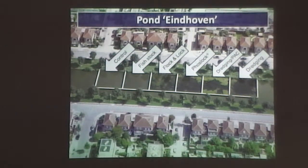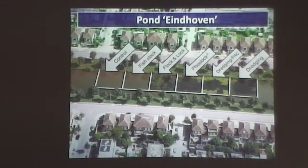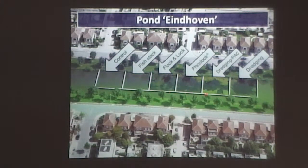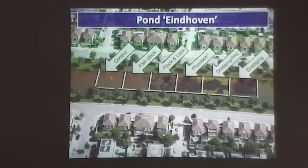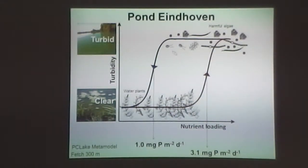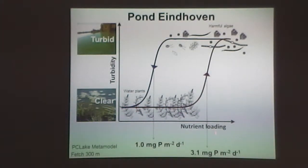So it's already an example that your system tells you what you need to do to get to your desired outcome. You can see already, over time, the ones that received some additional sediment treatment — their plants spread out and actually filled up the entire water, and the water became clear. These ones remained turbid.